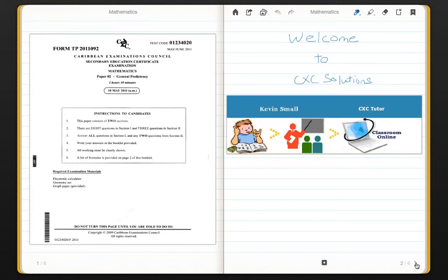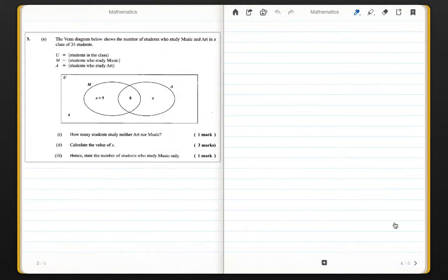The topic today is Set Theory, Question 3 Part A. The question is as follows: the Venn diagram below shows the number of students who study math, music and art in a class of 35 students.